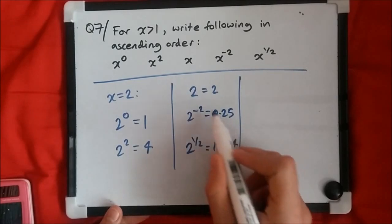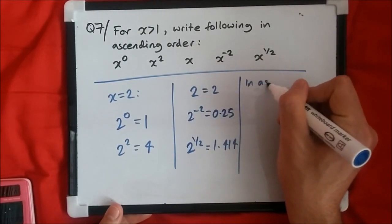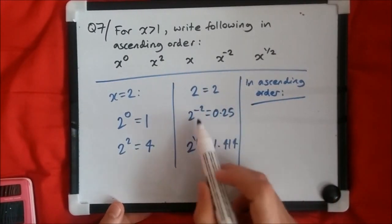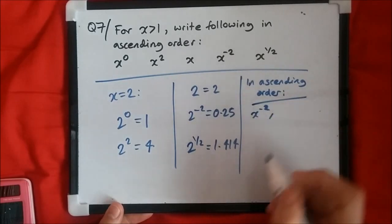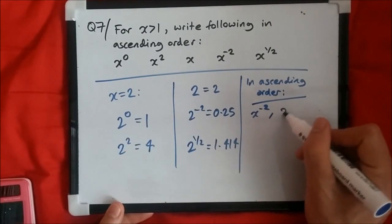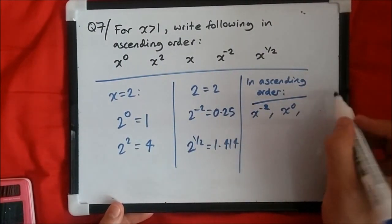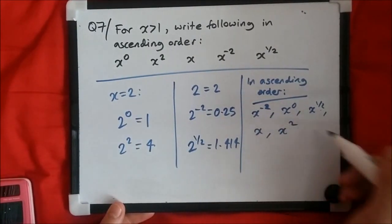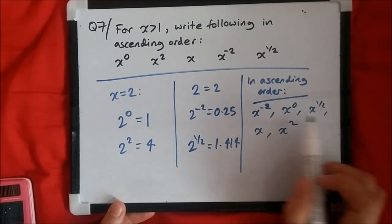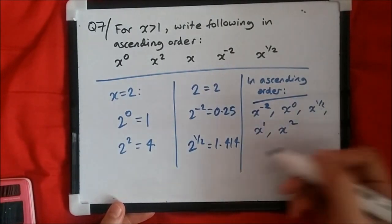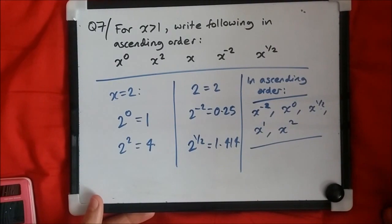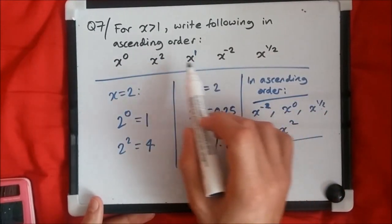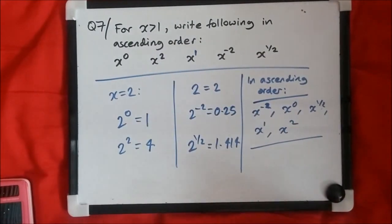So we can see the smallest value is 0.25. Putting these in ascending order: first x to the power minus 2, then x to the power zero, then x to the power half, then x (which is x to the power 1), then x squared. The easiest way to solve this is just to look at the powers and put them in ascending order: minus 2, then 0, then one half, then 1, then 2. That's it.